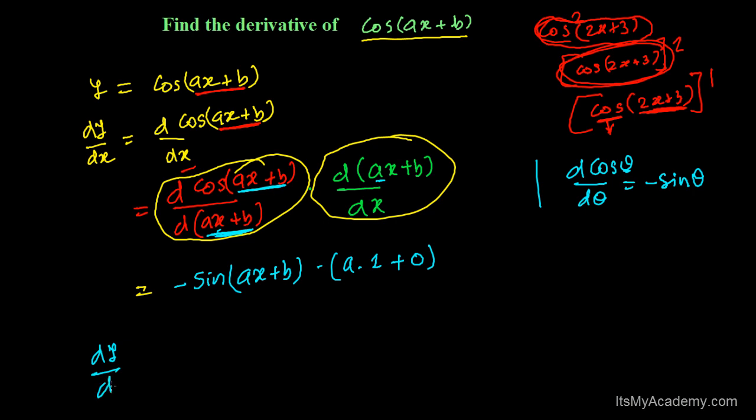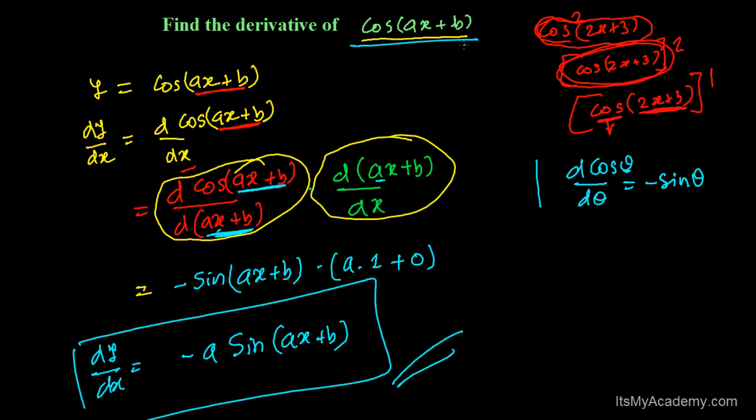So finally, my derivative dy/dx, I'm going to get a times 1, that is a. So I'm writing minus a sine(ax + b). That's it. This is my required derivative of the given function cos(ax + b).